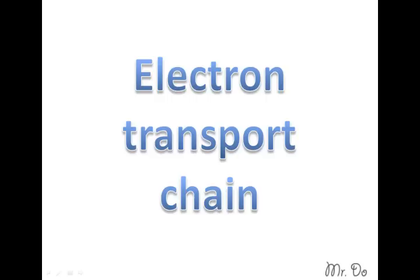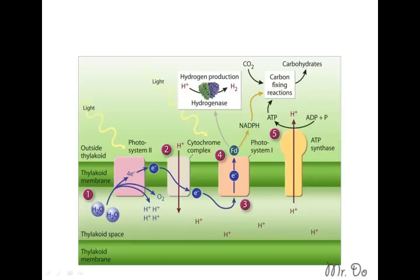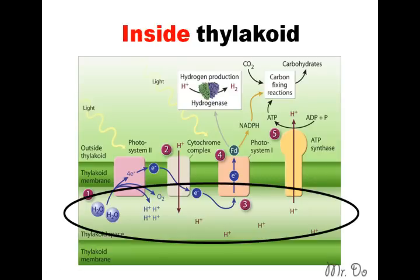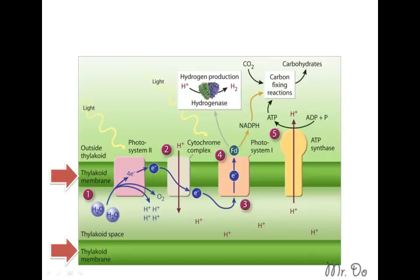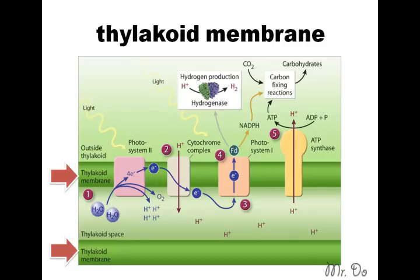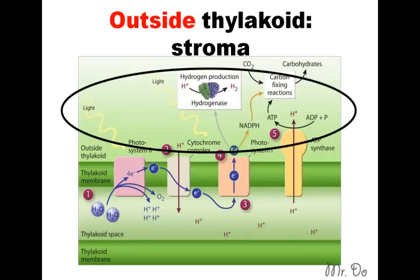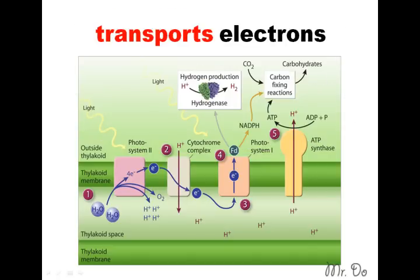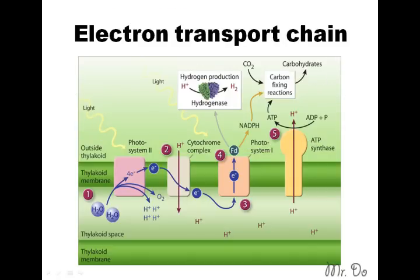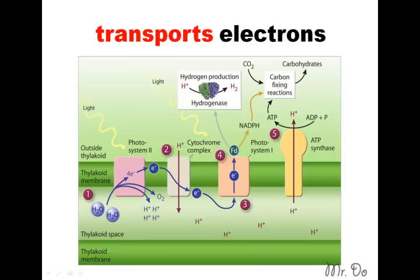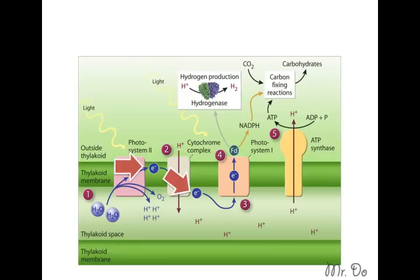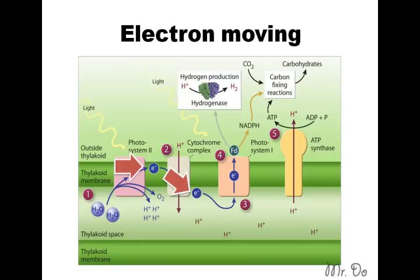Electron transport chain. This is the inside of the thylakoid. These are the thylakoid membrane. And this is the outside of the thylakoid, being the stroma. The electron transport chain transports electrons, so you can see the electron is moving.